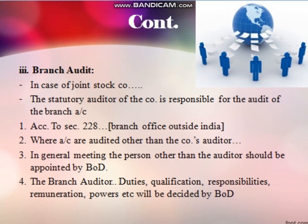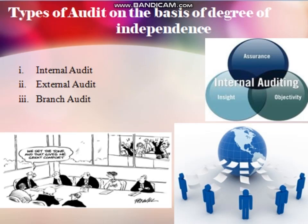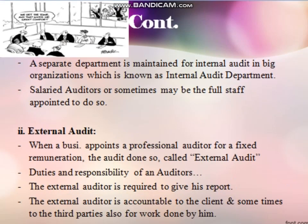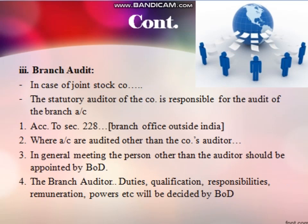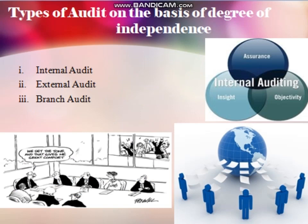Auditing done in different branches of a company is known as branch audit. So we discussed the classification of auditing on the basis of degree of independence: internal audit, external audit, and branch audit. If an employee is appointed in the company doing auditing work regularly, it is internal audit. If an external auditor is appointed for a specified period for a fixed remuneration, it is external audit. Auditing done in different branches is branch audit. Thank you all for listening — next classifications we will study in the next video.